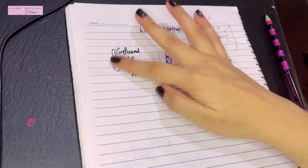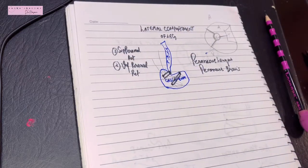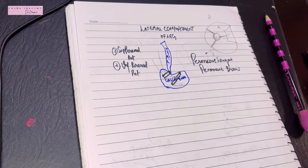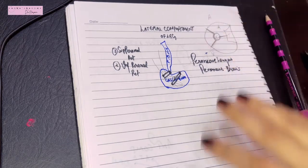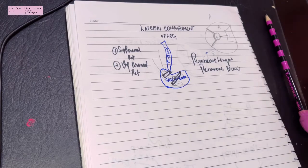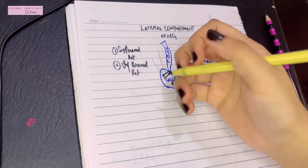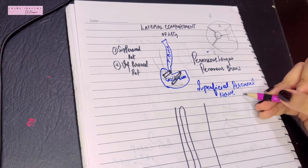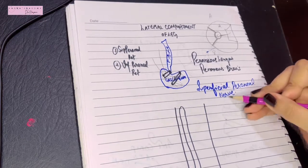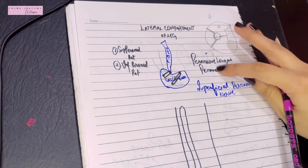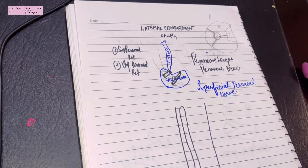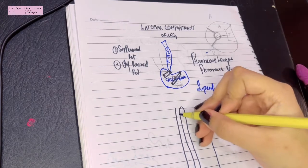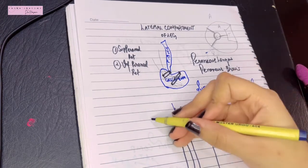So that was all about the peroneal retinacula. Now let's talk about these two muscles — they both arise from the lateral surface of the fibula. The most important nerve in the lateral compartment of the leg is the superficial peroneal nerve, which is the chief nerve of the lateral compartment and is responsible for supplying these two muscles. The superficial peroneal nerve basically arises at the neck of the fibula from the common peroneal nerve.